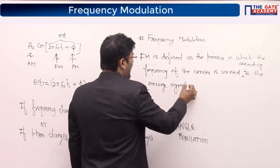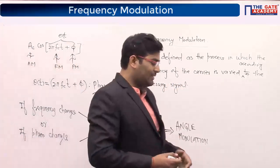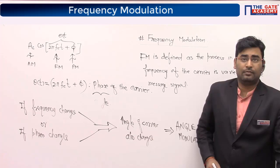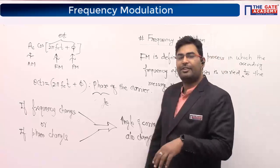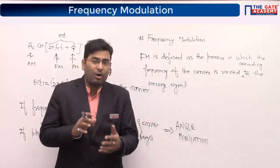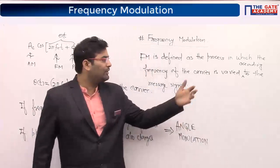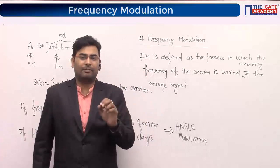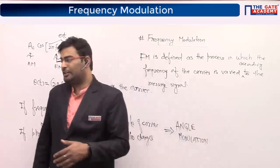Just as in amplitude modulation we infuse characteristics of the message signal onto the carrier, here we change carrier frequency with respect to the message signal. The answer to what changes the carrier frequency is that amplitude variation is converted into frequency variation. There is a device for that — VCO (Voltage Controlled Oscillator) — where the input is voltage variation and the output is frequency variation.